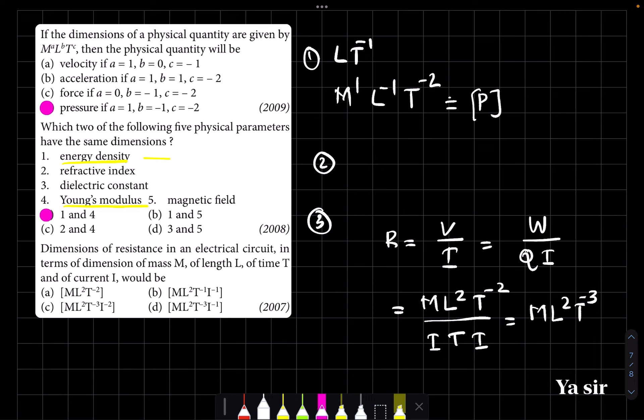So then I square, so I raised to minus 2. ML square T raised to minus 3, I raised to minus 2. Option C. C is the correct option. Okay, I hope it is a very easy question and we will meet in the next video.